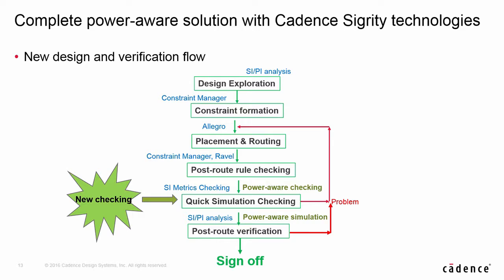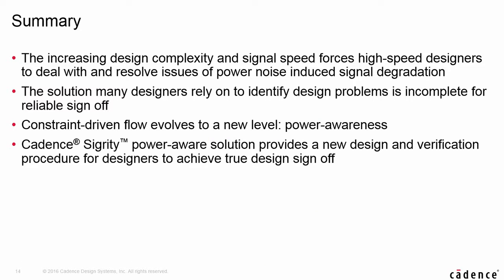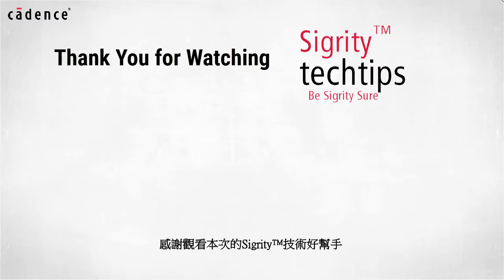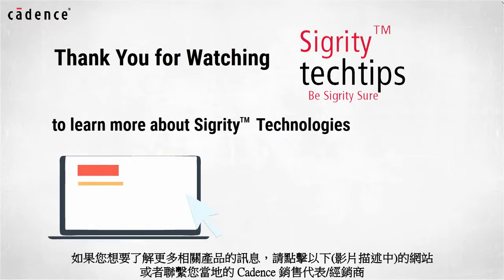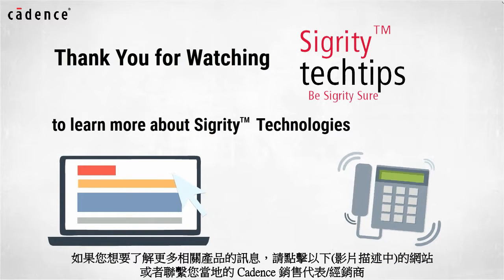Here is the new design and verification flow with power-aware capability. In summary, the constraint-driven flow needs to advance to a new level to account for power-induced noise on signals. Designers should check their current sign-off flow and update it with power-aware functions. Cadence Sigrity tools can help to achieve that goal. Thank you for watching another edition of Sigrity Tech Tips. For information on products used in today's video, click on the links below or contact your local Cadence Sales Representative or Cadence Channel Partner.